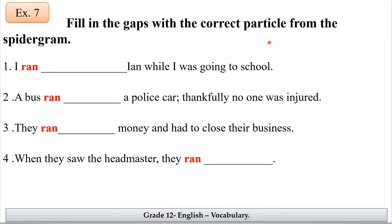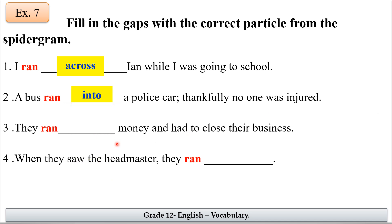Fill in the gaps with the correct particle from the spider diagram we studied. Number one: I ran across Ayan while I was going to school — 'run across' means to meet by chance. Number two: a bus ran into a police car; thankfully no one was injured — 'ran into' means collided. Number three: they ran out of money and had to close their business — they had no money. Number four: when they saw the headmaster, they ran away — they were afraid.